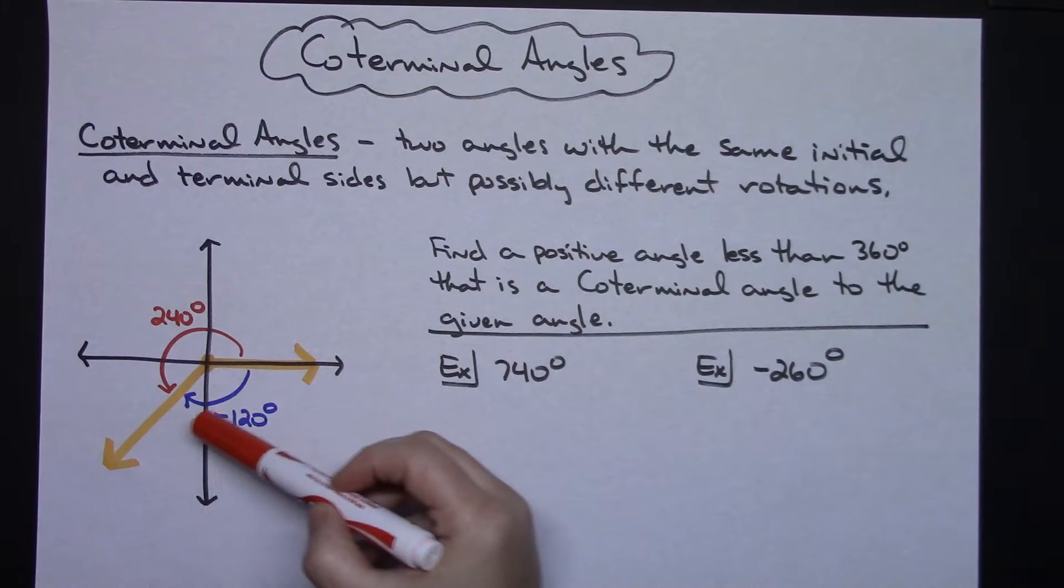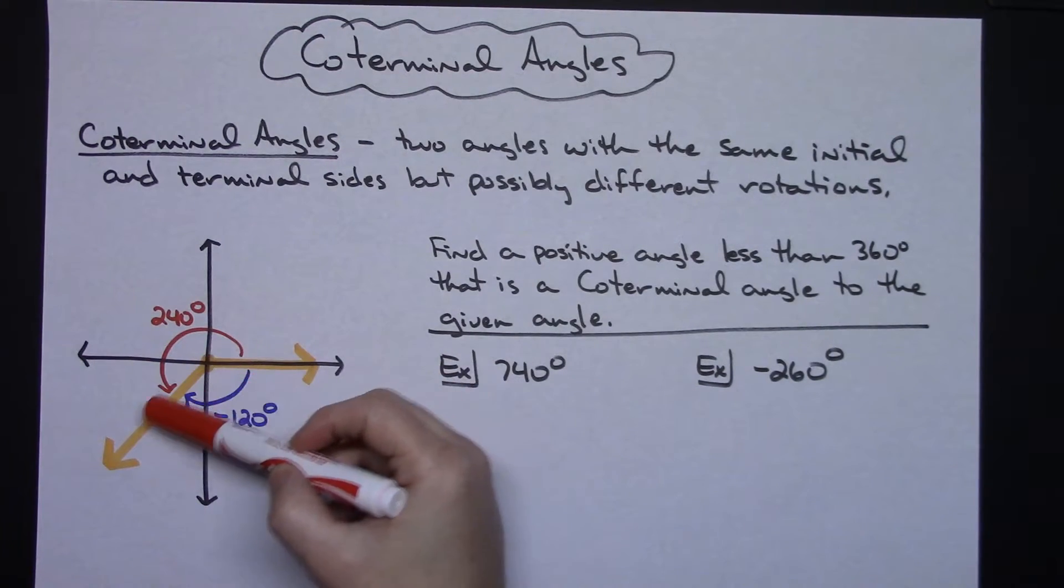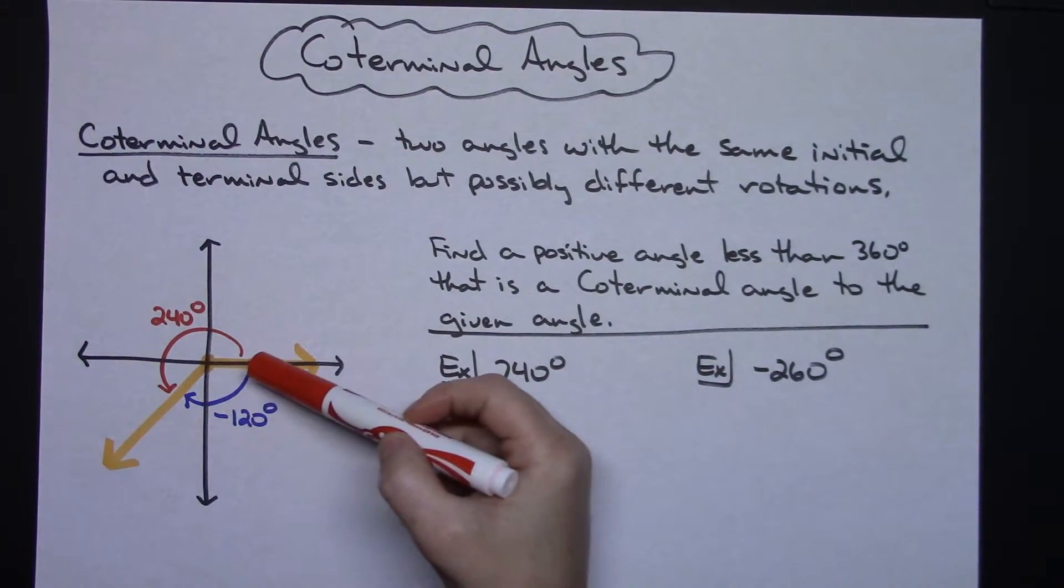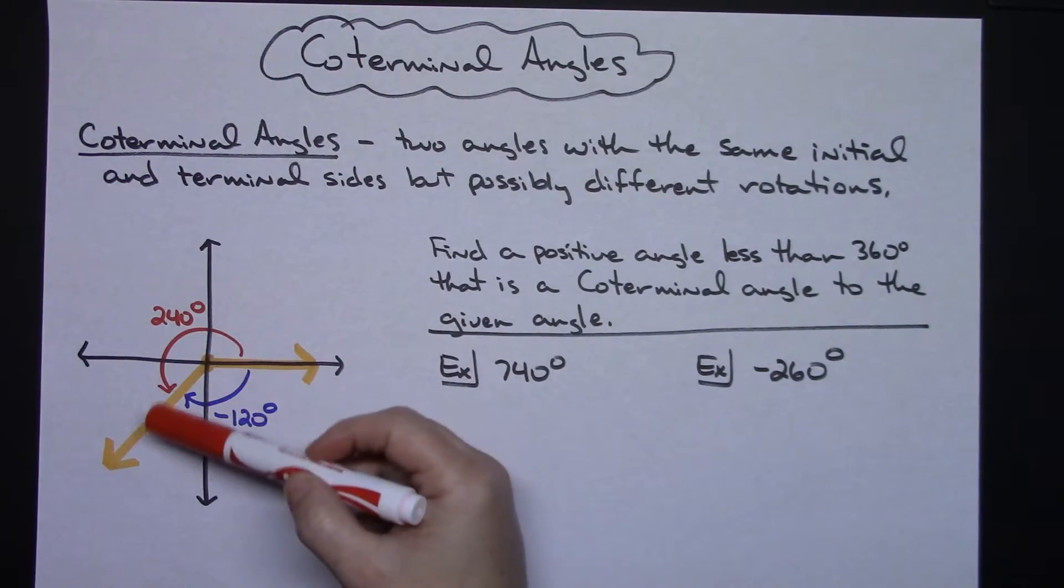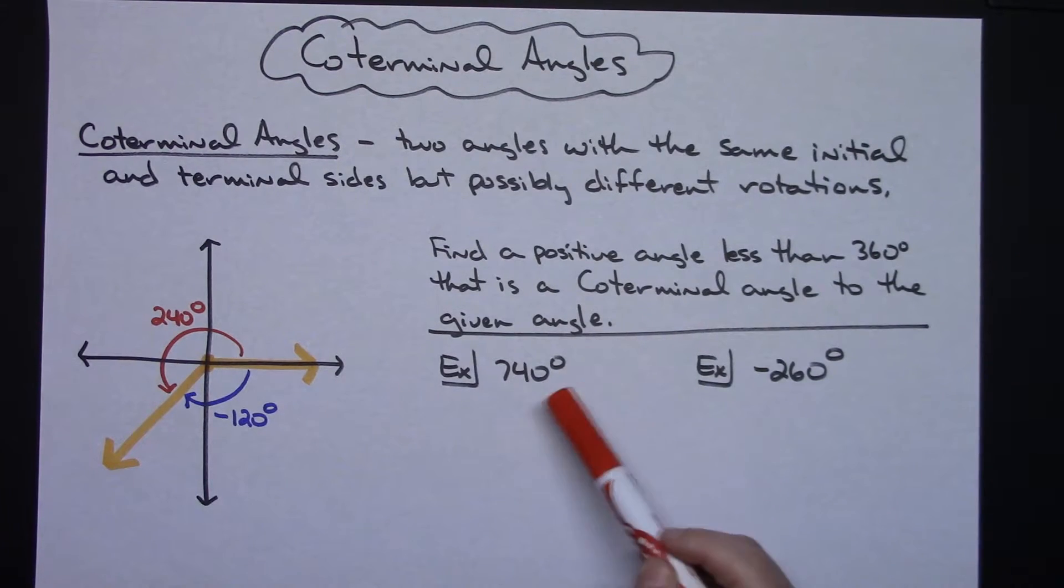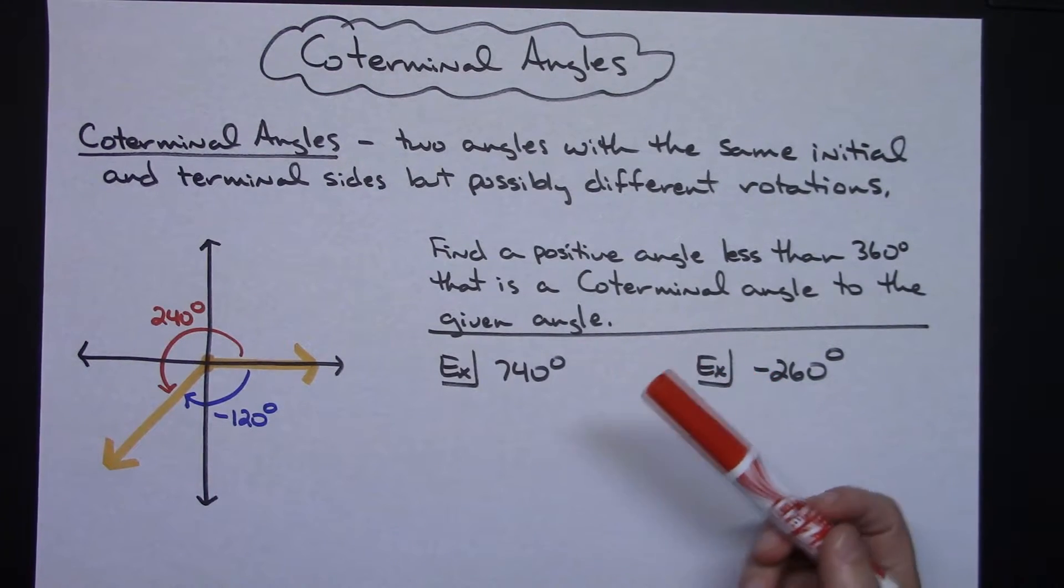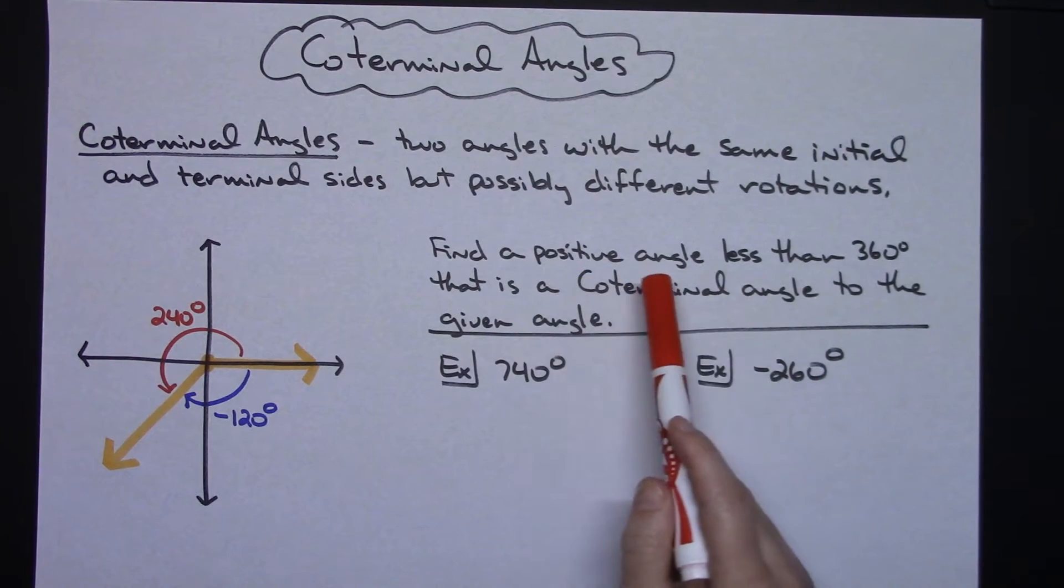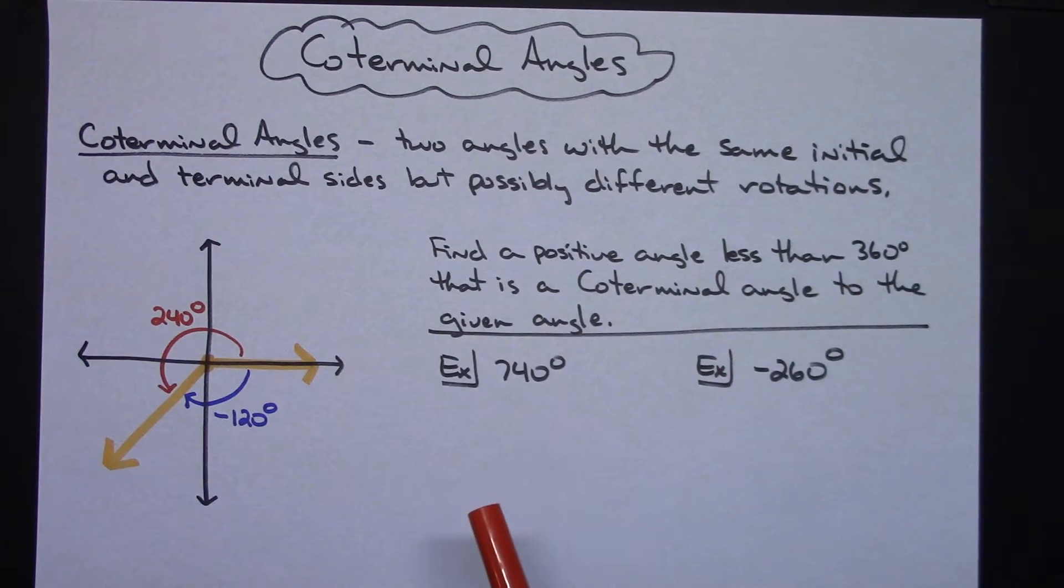If you notice the fact that when it's got the same terminal side and the same initial side then you're dealing with 360 degrees. It's got to be all the way around the circle. So in this scenario I'm either going to have to add 360 degrees or subtract 360 degrees to come up with a positive angle less than 360 degrees.